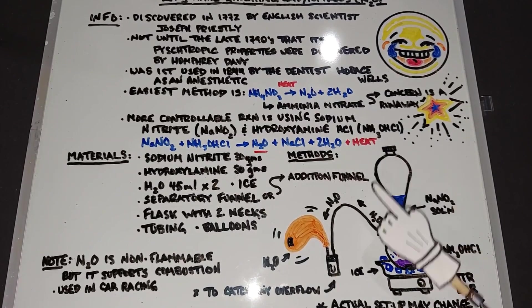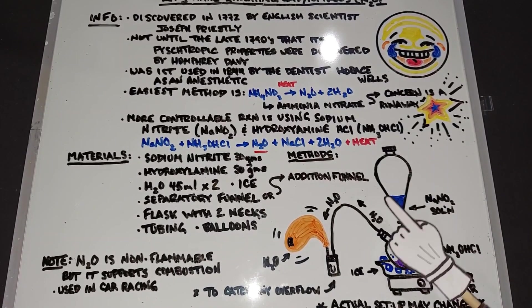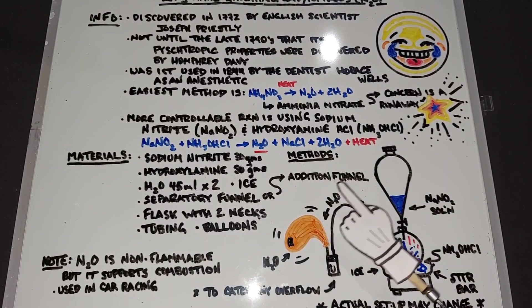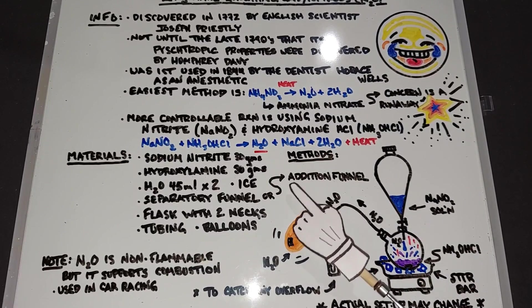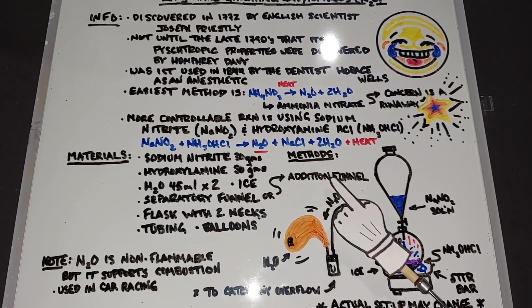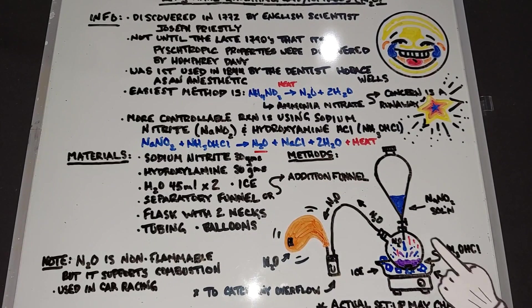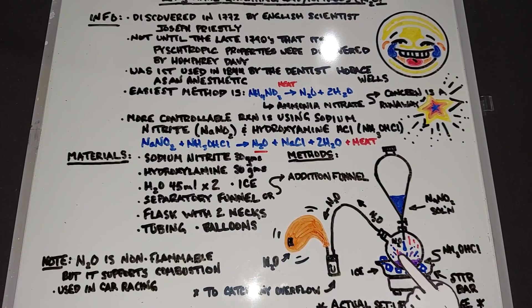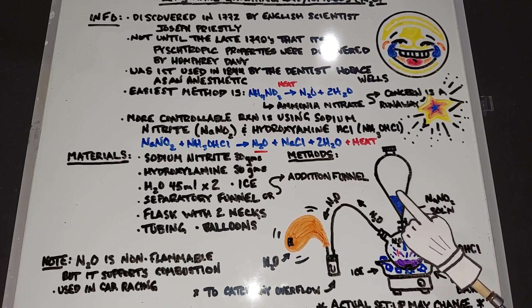Now to go over our methods. Again I'm showing a separatory funnel here but I probably will end up using an addition funnel, a pressure equalizing addition funnel. However, regardless, we're going to have our round bottom flask with our two necks here and we'll have our hydroxylamine hydrochloride down here. Of course it will be dissolved in water.